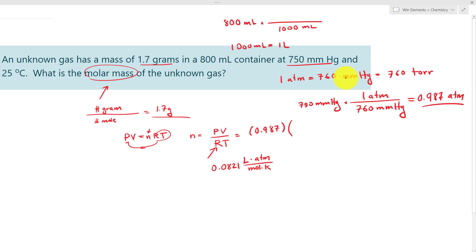From torr or millimeter mercury, you just divide by 760. But here I want to show you. So in this case, we have 1 liter, so we have 0.8 liter.